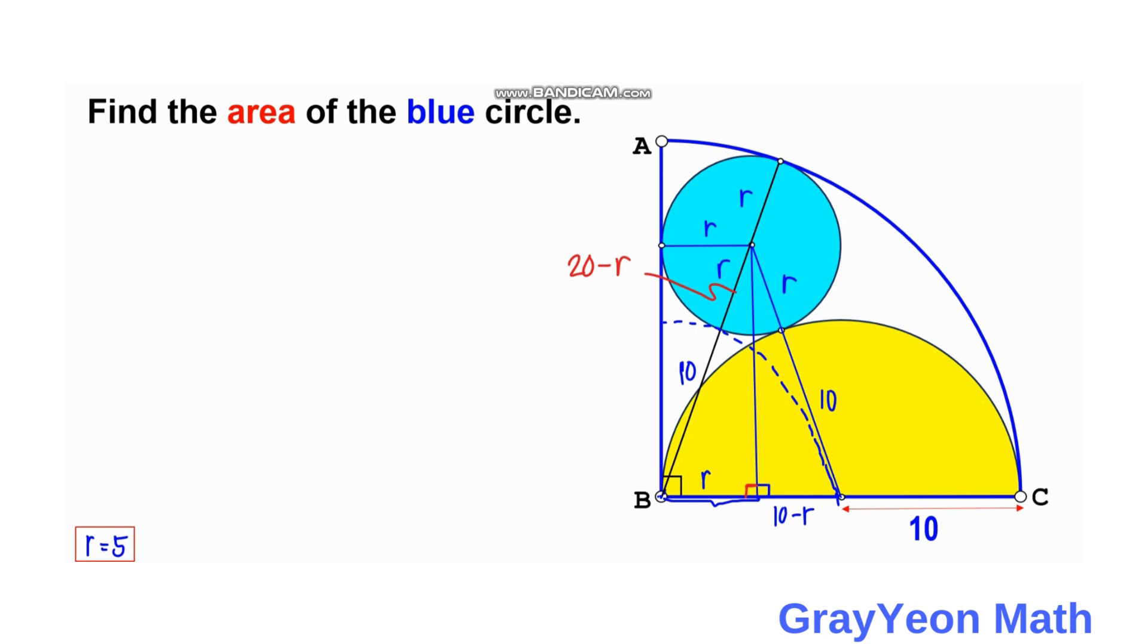So it is the same line but represented in a different way. So the first is 20 minus r is equal to 10 plus r. So 20 minus 10, if we put this to the left, so 20 minus 10 is equal to, if we put this to the right, so this becomes r plus r. So 20 minus 10 is 10 is equal to 2r.